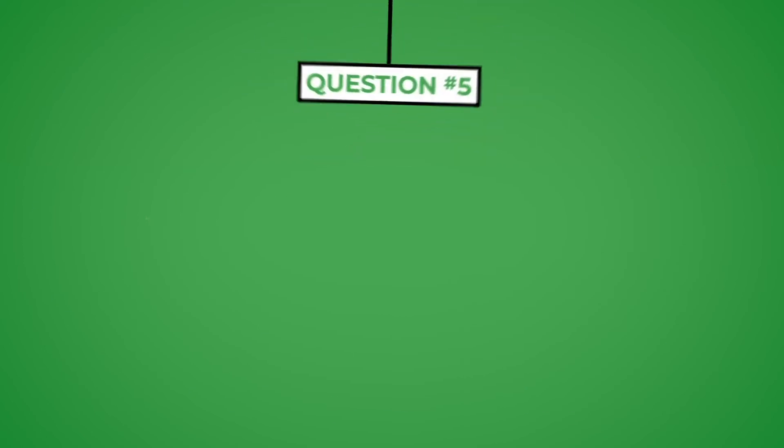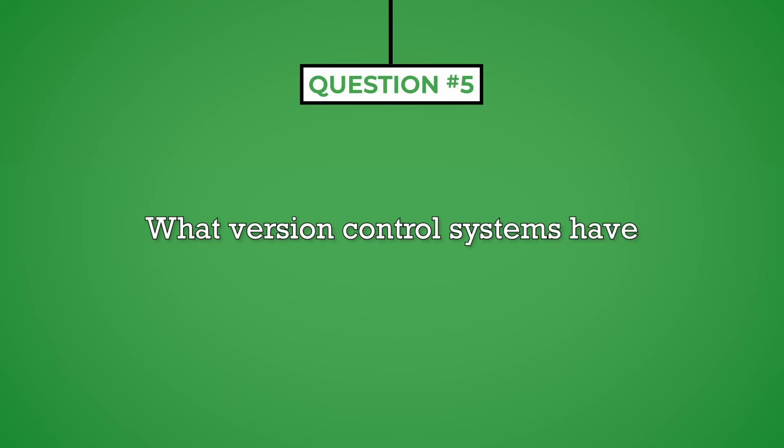Question number five: what version control systems have you worked with? One of the key principles of developing code for any application is version control. This ensures that any changes made to the code are documented and that developers can refer to older versions if the newly developed code does not function properly. Being familiar with and utilizing version control systems is a fundamental requirement for any front-end developer, and you can anticipate this question will be asked at nearly every interview.